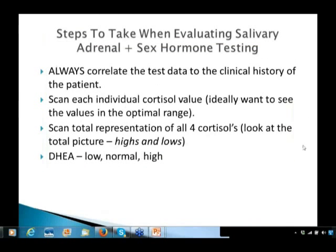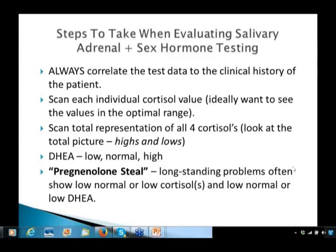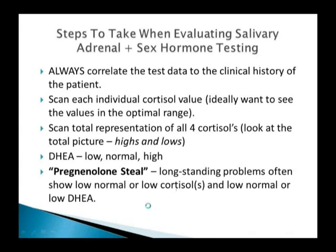So what are some steps when evaluating salivary adrenal and sex hormone testing? Always correlate the test with the clinical history. I scan individual cortisol levels, ideally wanting values in the optimal range — the upper one-third of normal. I also look at the total picture of all four cortisols, whether DHEA is low or high, and assess for pregnenolone steal — that preferential pathway under stress where pregnenolone is pulled through progesterone to support cortisol production. Longstanding problems often show low-normal or low cortisols and low-normal or low DHEA, which is typical of pregnenolone steal.